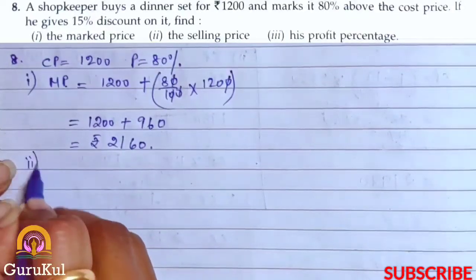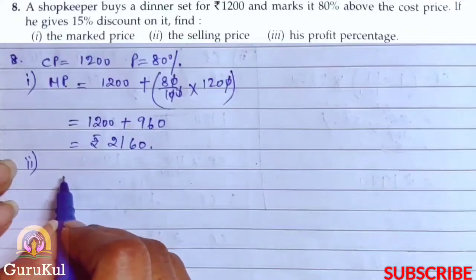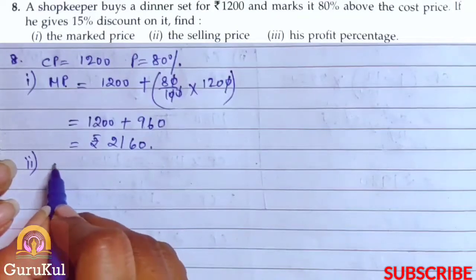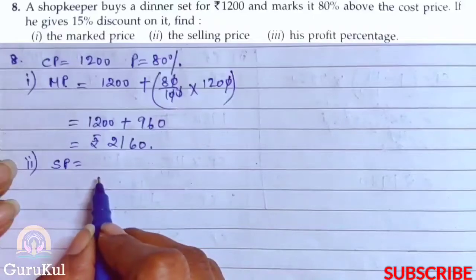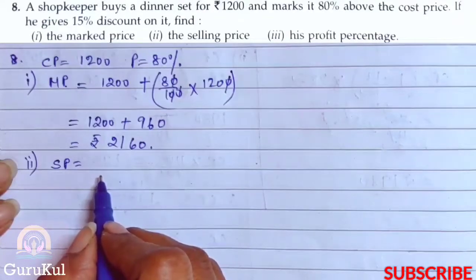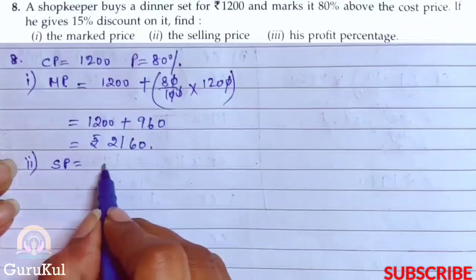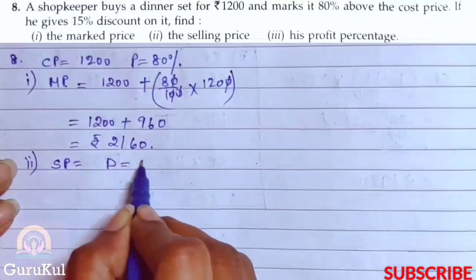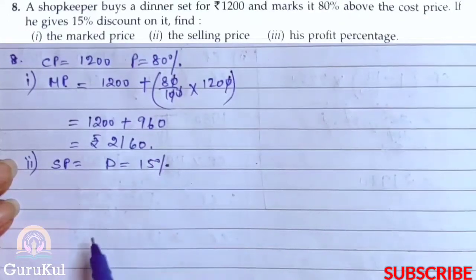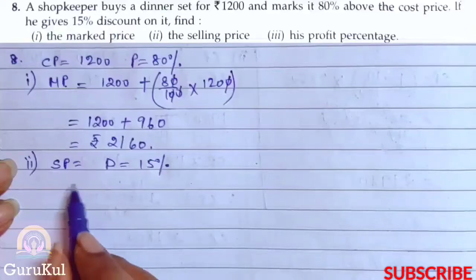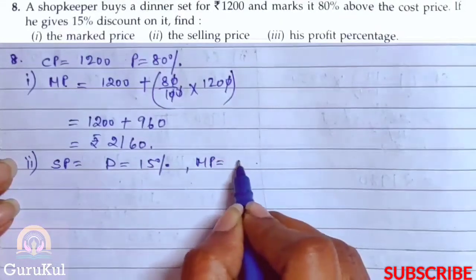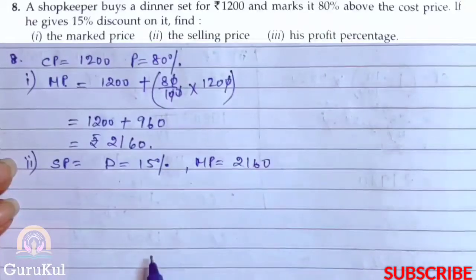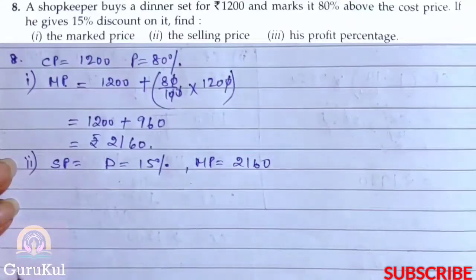Now the second part of question number 8. We need to find the selling price if he gives a discount of 15% on it. So here discount is 15%, and our mark price is 2160. Now, what is the formula?